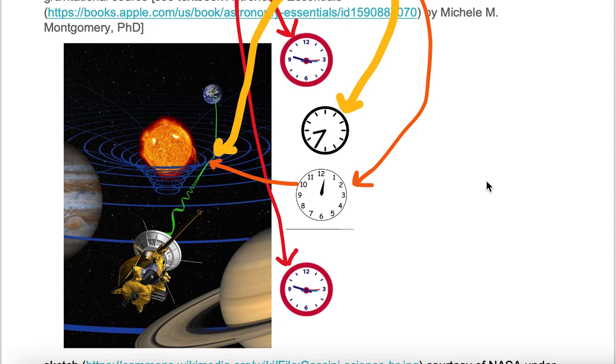So let's compare these clocks. The clock at Earth and the clock at the Cassini space probe are ticking at the same rate. As soon as the clock reaches a gravitationally massive object and falls into the gravitational potential well, the clock ticking pace slows down.